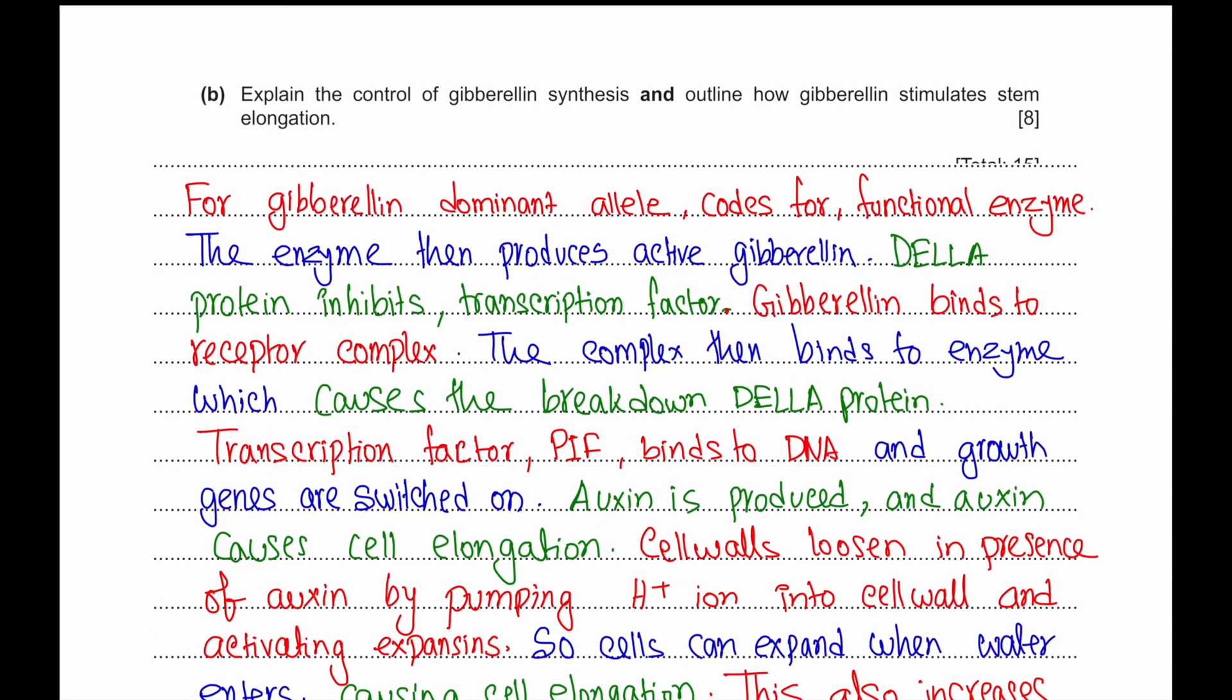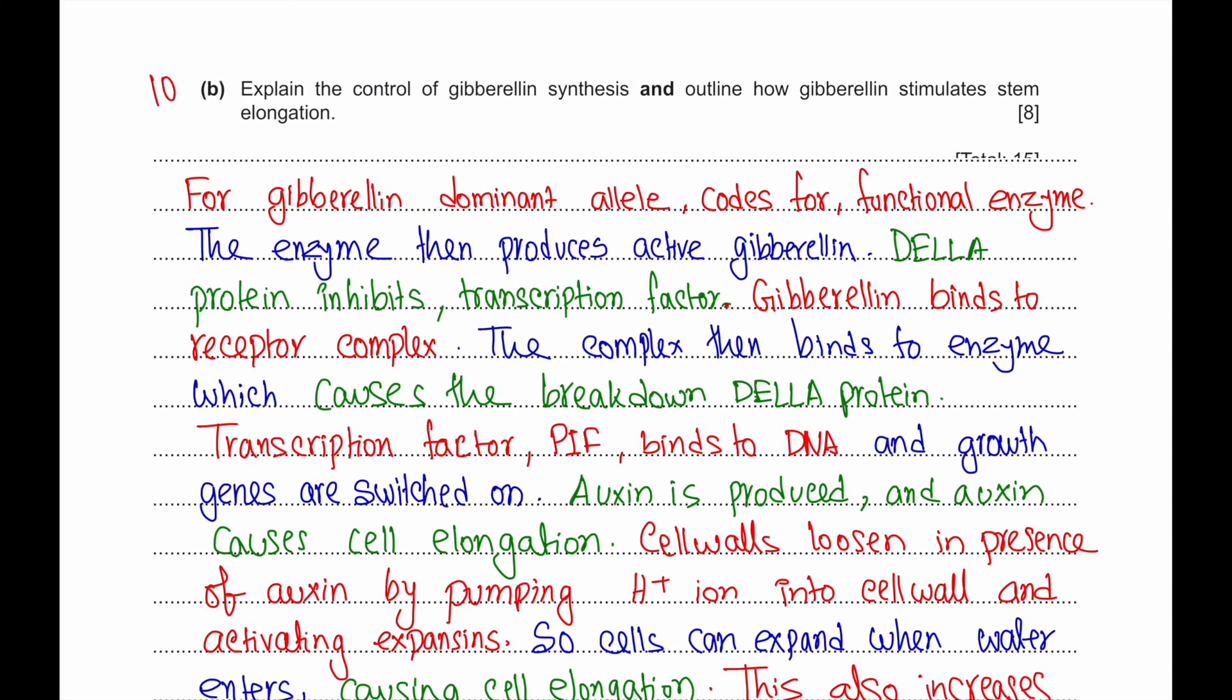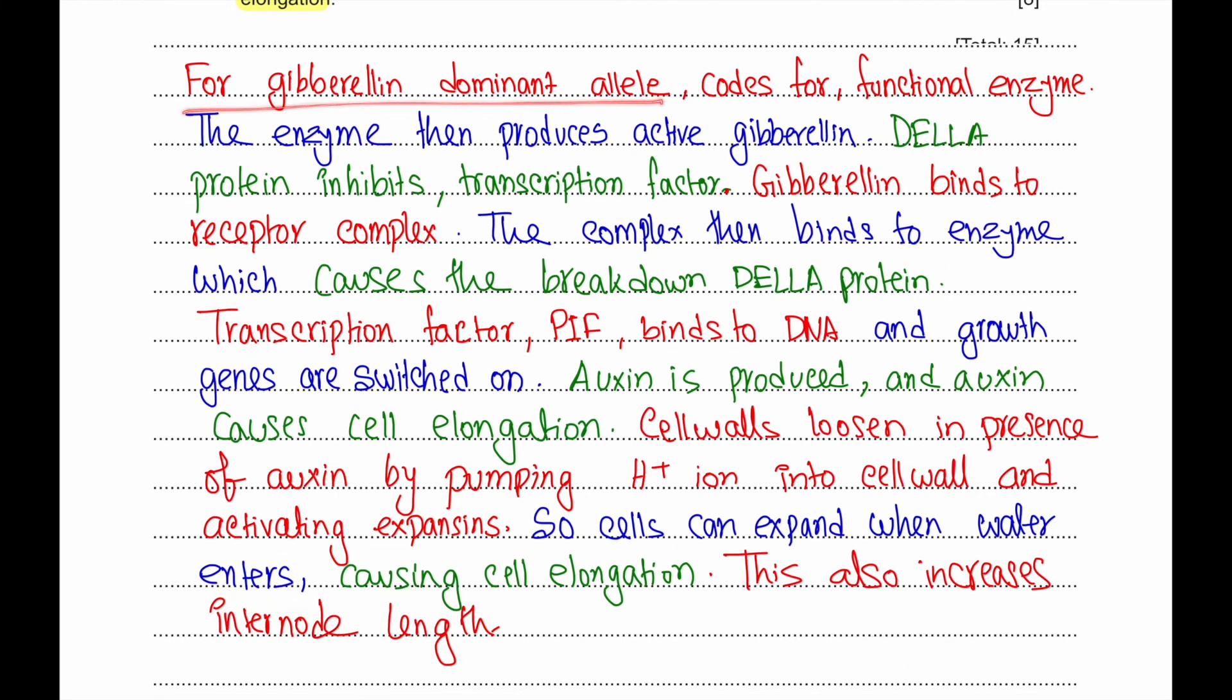Question 10b: Explain the control of gibberellin synthesis and outline how gibberellin stimulates stem elongation. For gibberellin, the dominant allele codes for functional enzyme that produces active gibberellin. DELLA protein inhibits transcription factor. However, gibberellin when it binds to the receptor complex, the complex then can bind with an enzyme which causes the breakdown of DELLA protein.